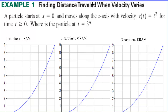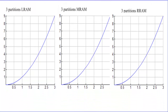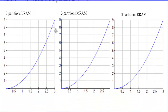Example 1: Finding distance traveled when velocity varies. A particle starts at x equals zero and moves along the x-axis with velocity v(t) = t². It's not a constant — the velocity is going to vary. For time t ≥ 0, where is the particle at t = 3? We take t² — here's the parabola — and we go from zero to three, cutting it into three subintervals.